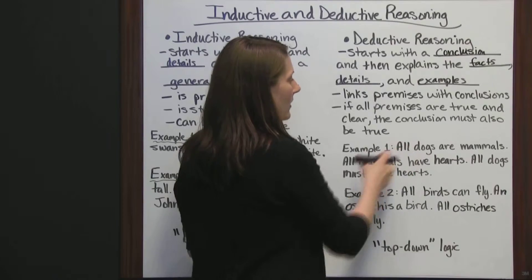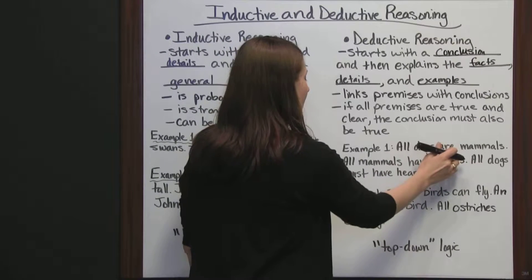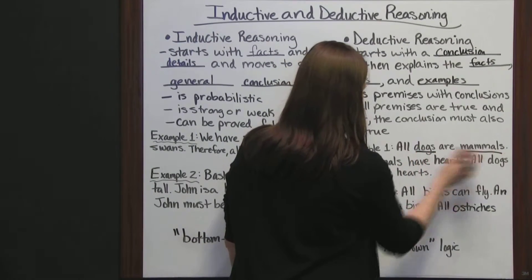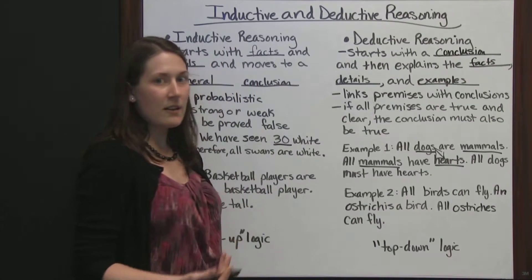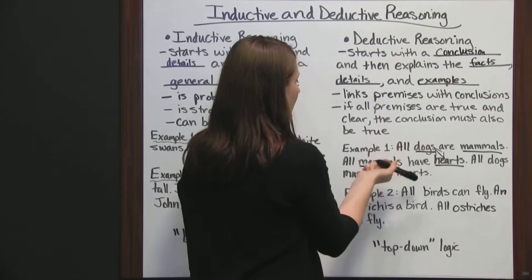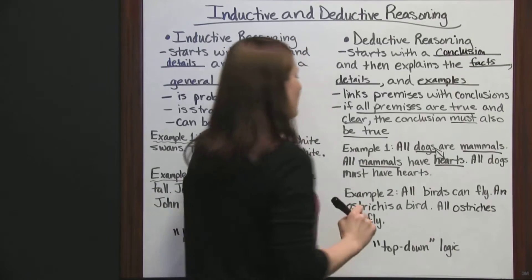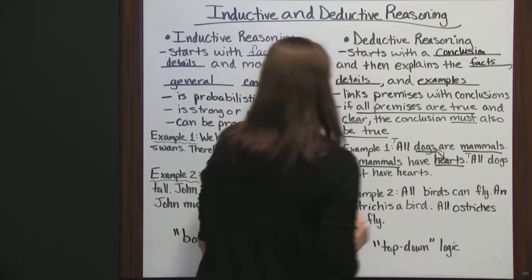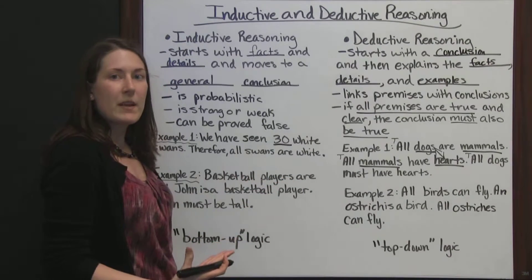Here's the first example. All dogs are mammals. All mammals have hearts. Based on the fact that all dogs are mammals and all mammals have hearts, all dogs must have hearts. Dogs are mammals and mammals have hearts, which means dogs must have hearts since they are mammals and all mammals have hearts. This is a true conclusion, because all the premises are true. All dogs are mammals — true. All mammals have hearts — true. Therefore, all dogs must have hearts — true. This is a true conclusion based on deductive reasoning.